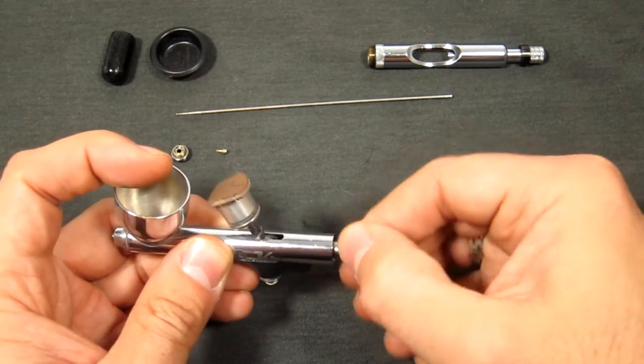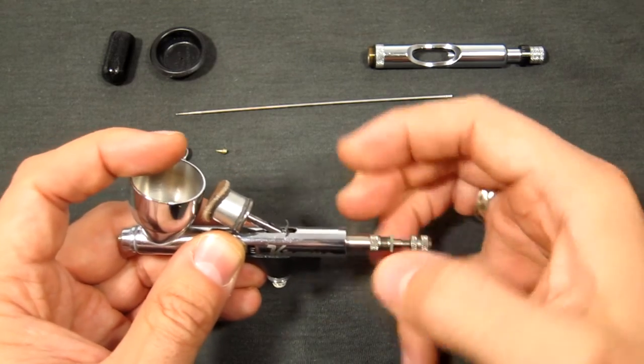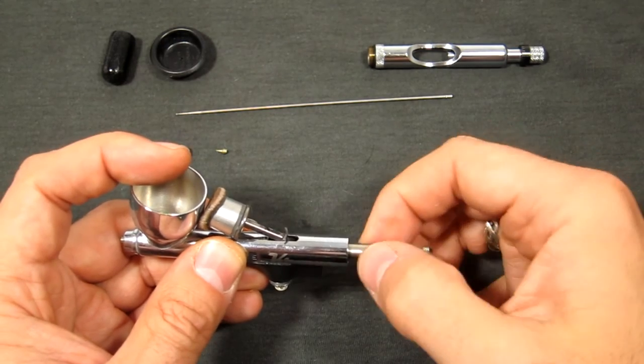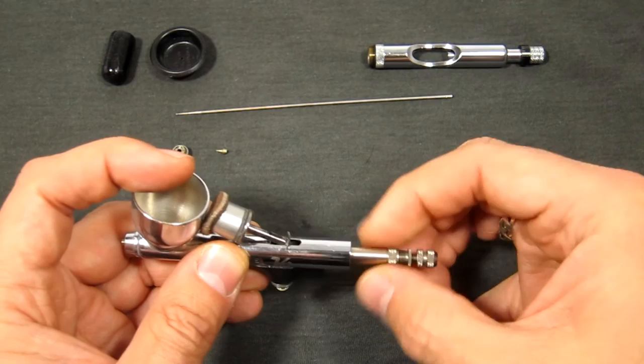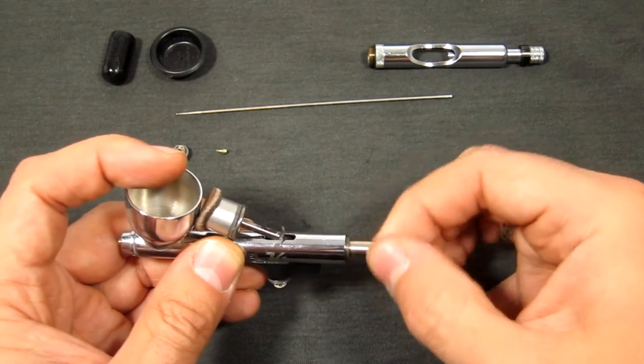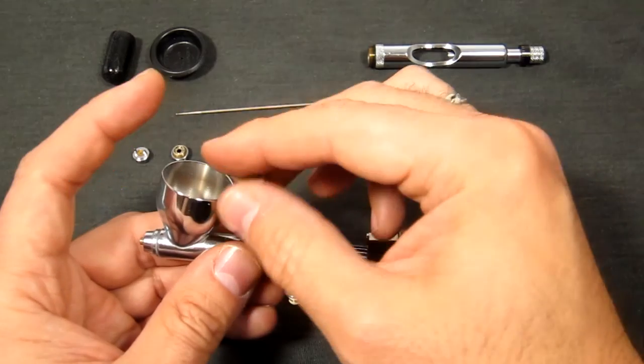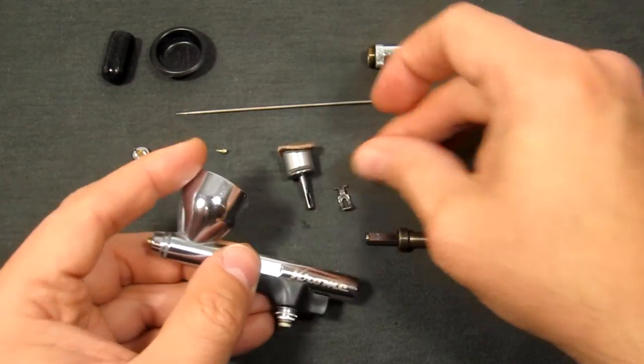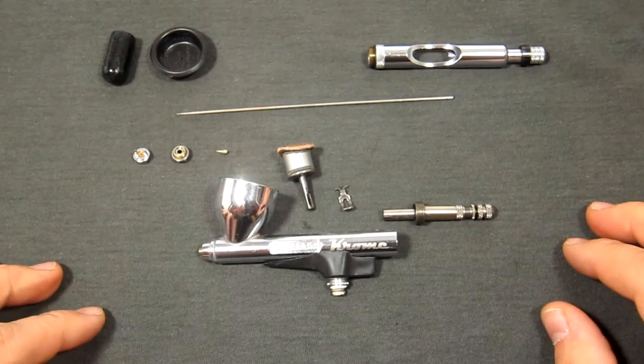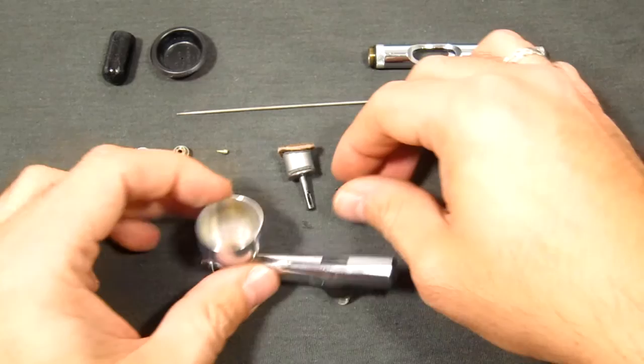...we can take off the trigger assembly very easily. You'll notice that it holds the trigger in place—that's why the trigger's kind of falling down—and there's the trigger assembly, the trigger also is loose, and so is the backplate. So there you go.